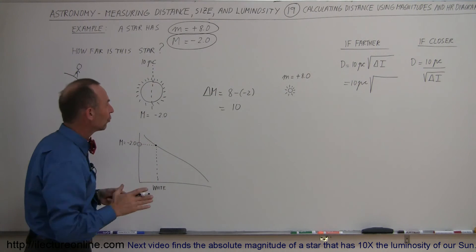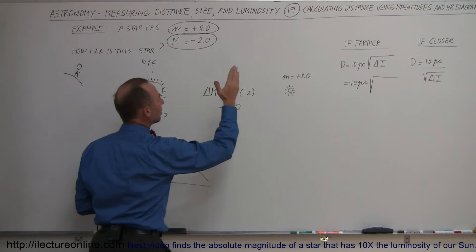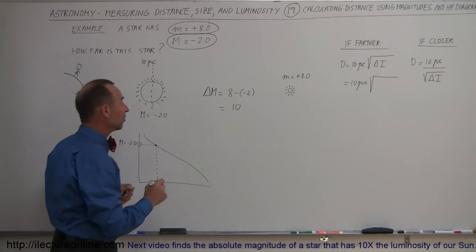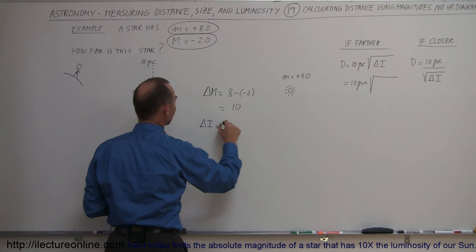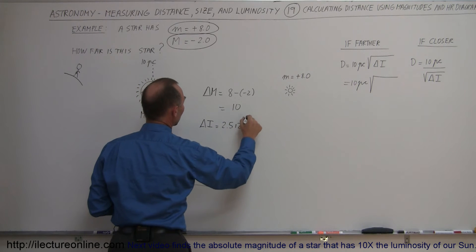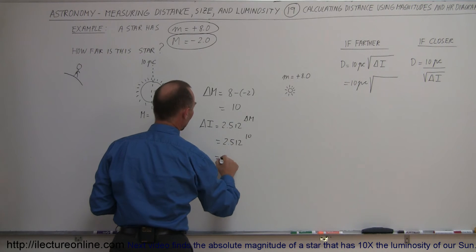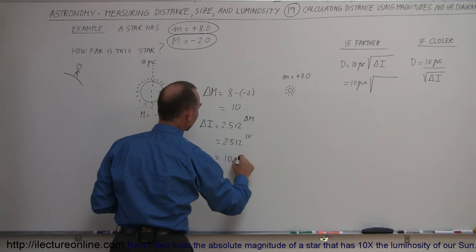So then you find the difference in intensity. The difference in intensity is equal to 2.512 raised to the difference in the magnitudes. So in this case, it's 2.512 raised to the 10 power, which is equal to 10,000.